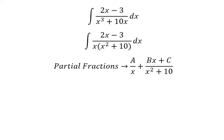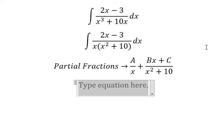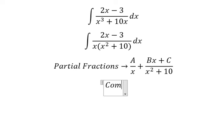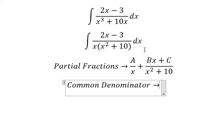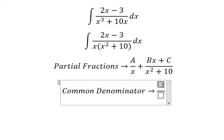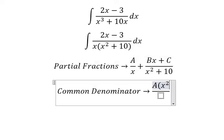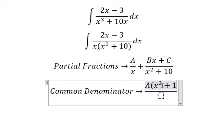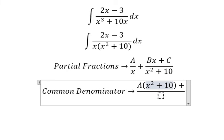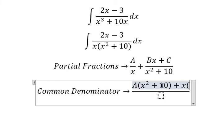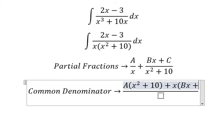Next we need to find the common denominator. So capital A multiplied by x squared plus 10, and x multiplied by bx plus c.